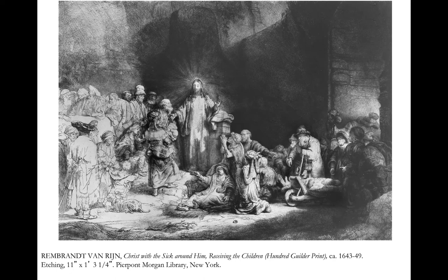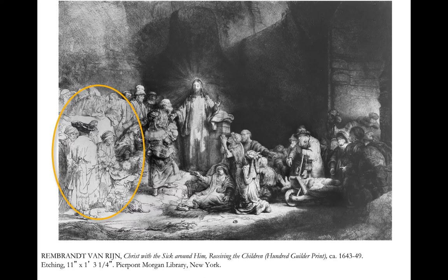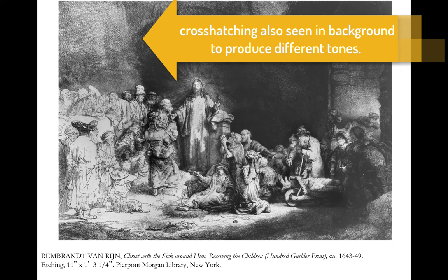Rembrandt is pulling from Matthew 19 where events are all kind of squished together — he has gathered multitudes, a woman on a mat, children, and Peter's trying to keep the women and children away. We also have a pensive man and a rich young ruler, with lots of scripture all mashed together. This is a beautiful, complex composition. We have light emanating from Christ. Rembrandt is using chiaroscuro and moving from light to dark from left to right. The figures are a lot less detailed in the light areas and they get more complex over to the right-hand side. He is using cross-hatching to show three-dimensionality and detail in the figures.